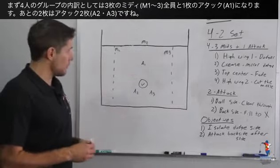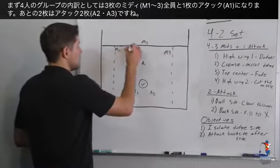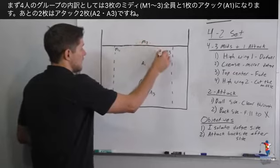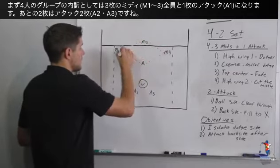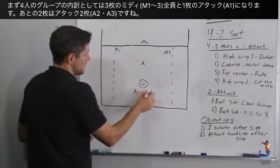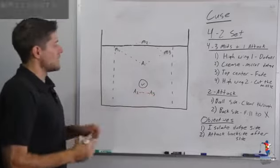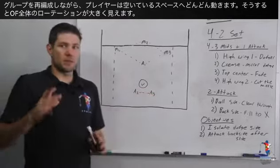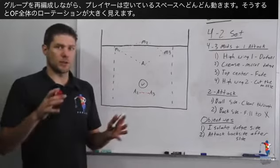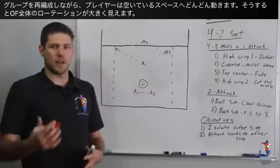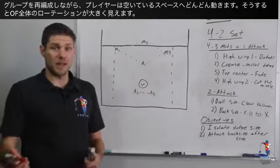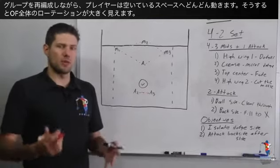The four players are all of the midfielders and one attackman. The two players are just the other two attackmen. By simply redefining the groups we are going to pull some players into areas of the field where they're not used to being and the motions are a little more dynamic.